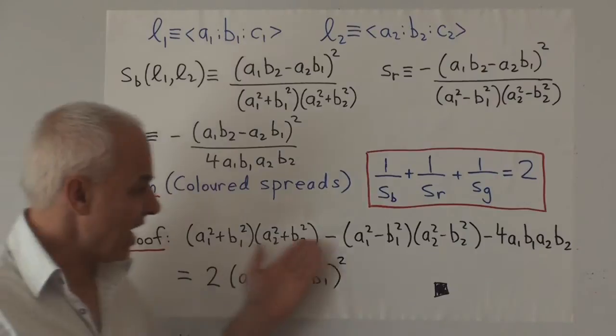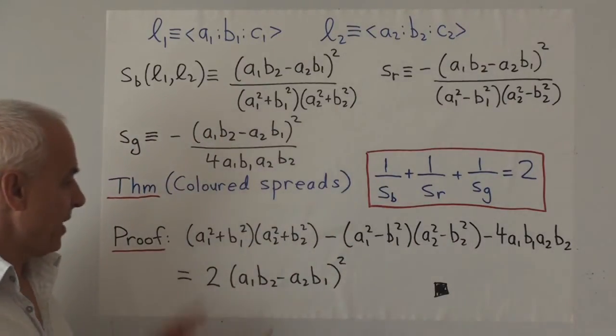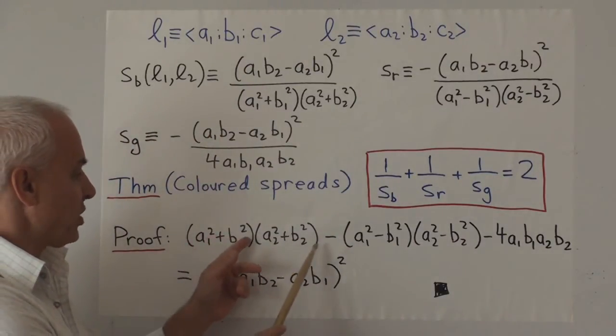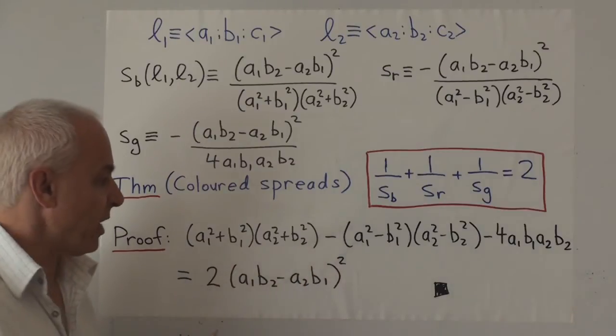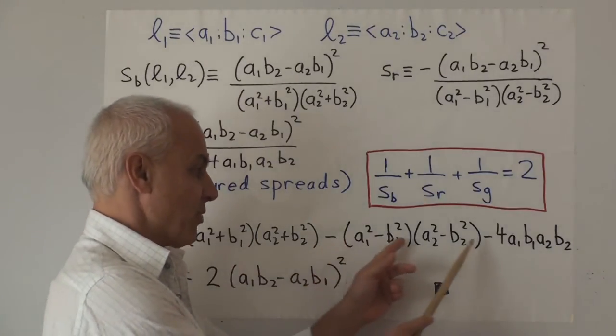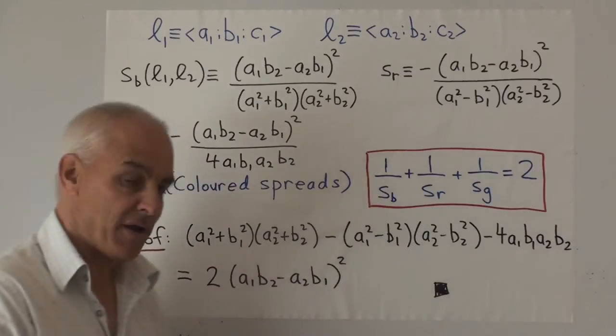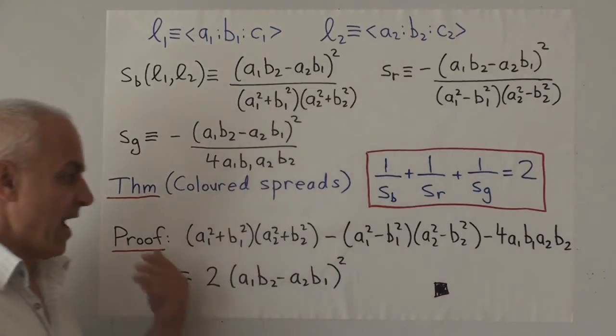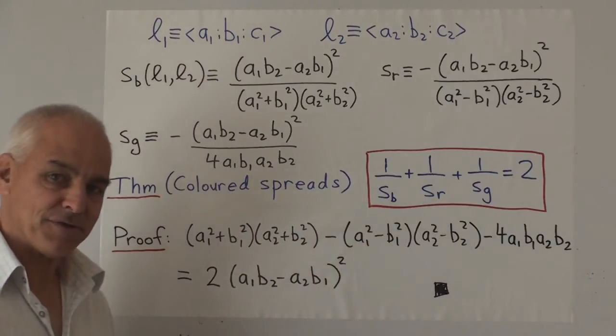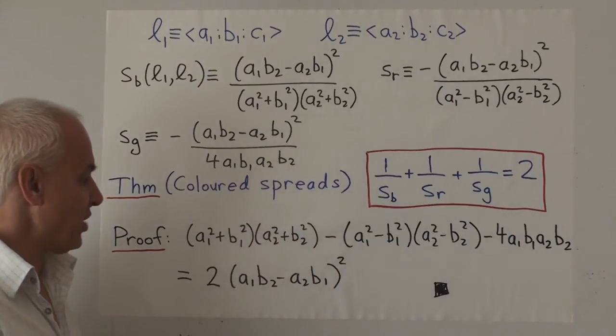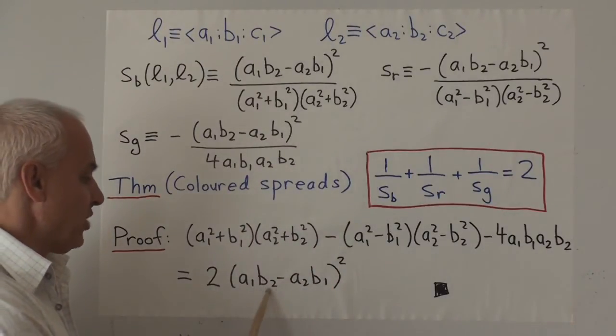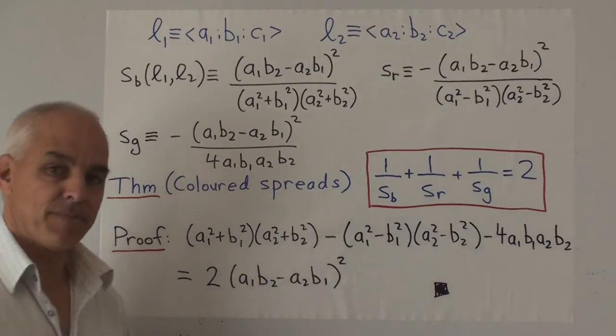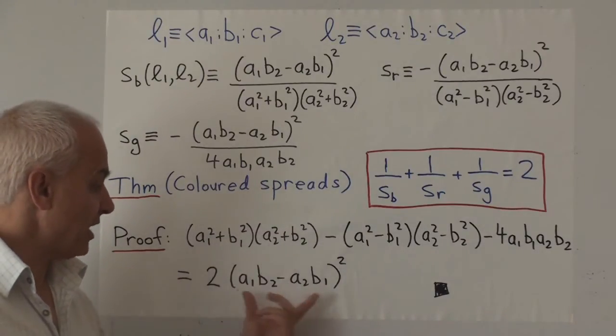The identity is that (a₁² + b₁²)(a₂² + b₂²) - (a₁² - b₁²)(a₂² - b₂²) - 4a₁b₁a₂b₂, that when you expand it all out, cancel terms, rearrange, you get 2(a₁b₂ - a₂b₁)².